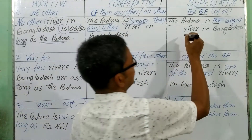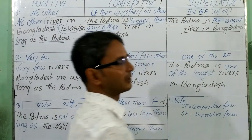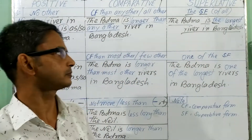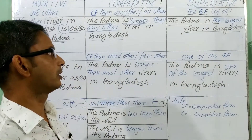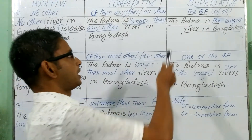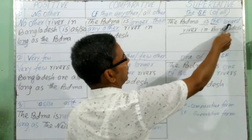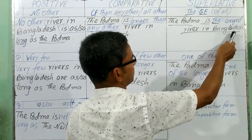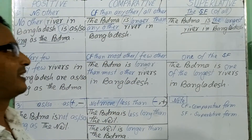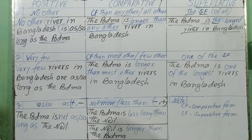Then the rest of the portion of the sentence will be written later: 'river in Bangladesh.' So the superlative form is: 'The Padma is the longest river in Bangladesh.' I can change it easily.